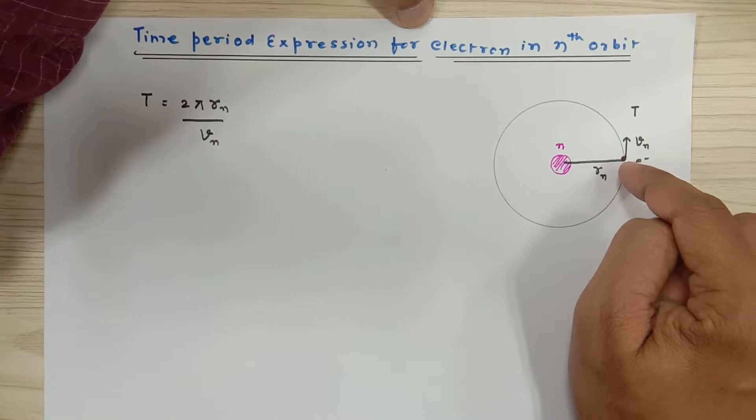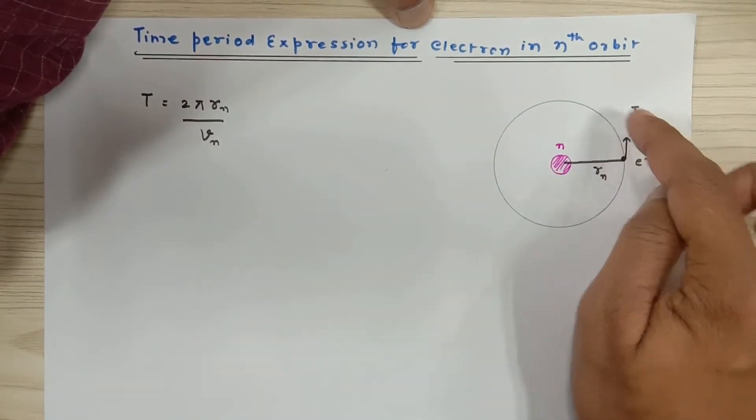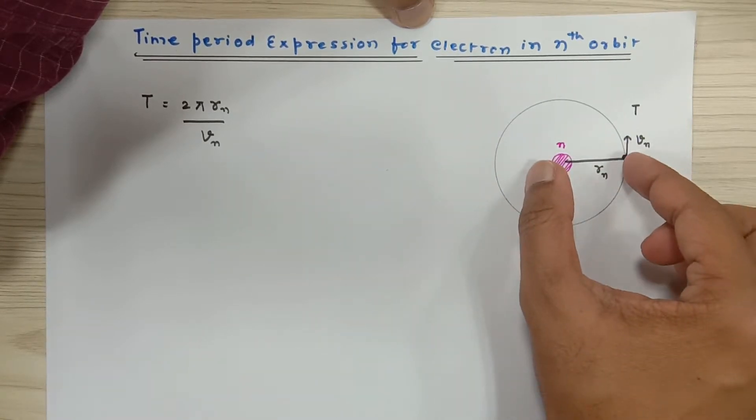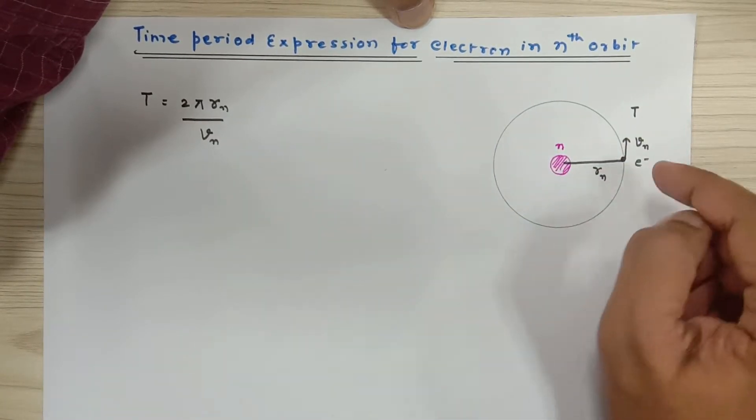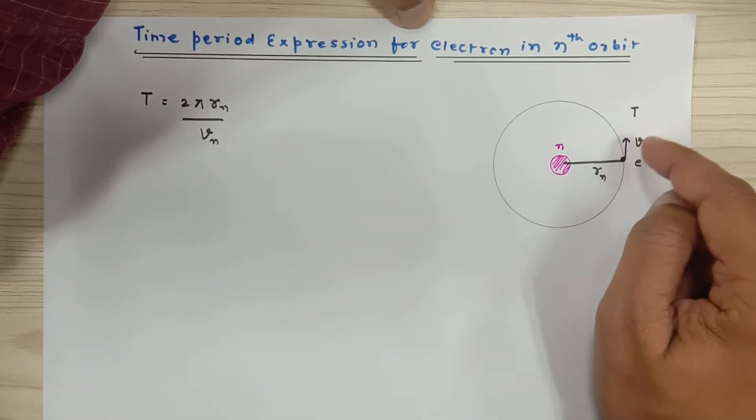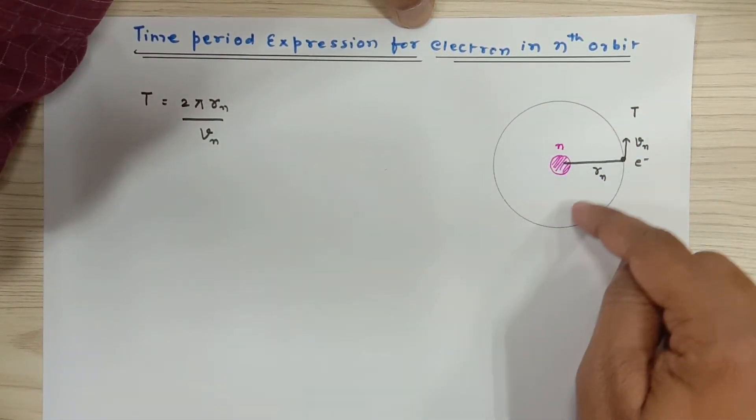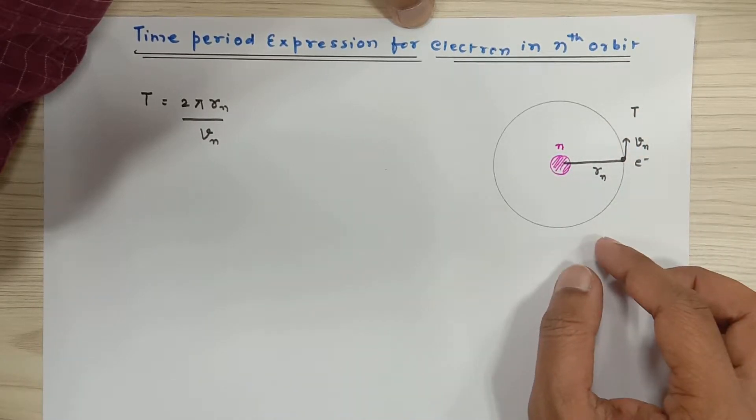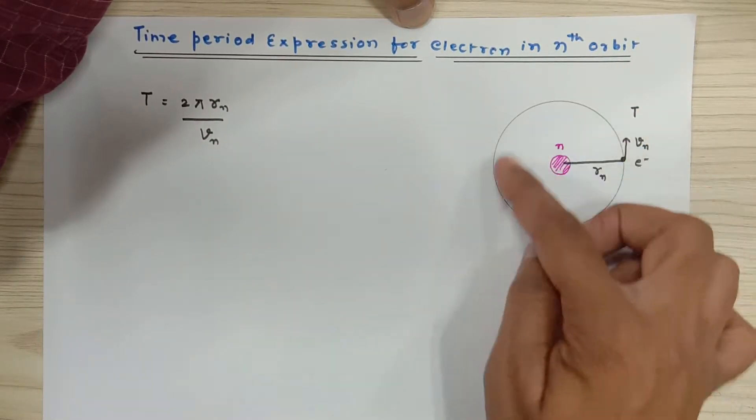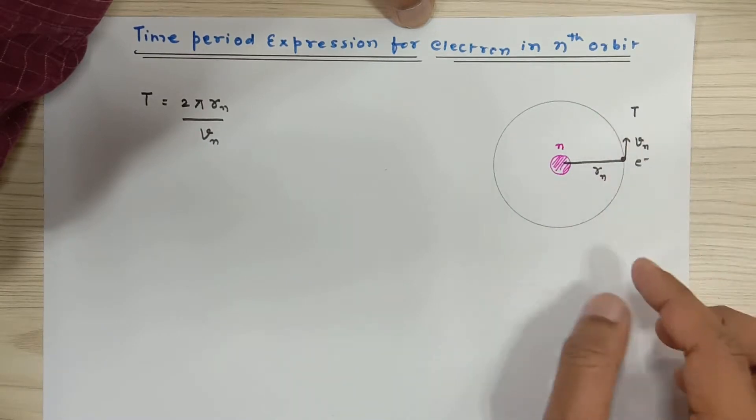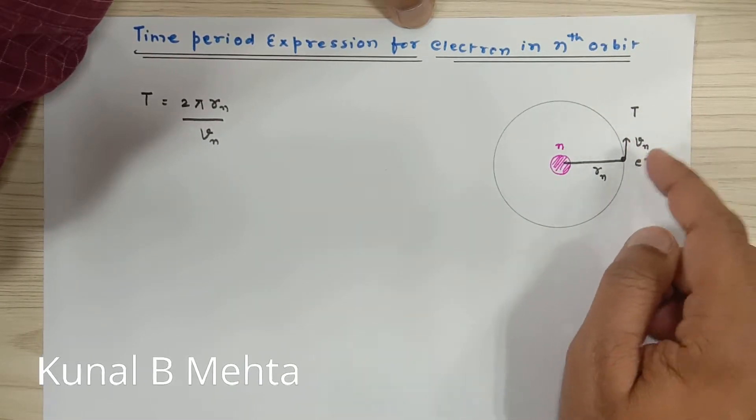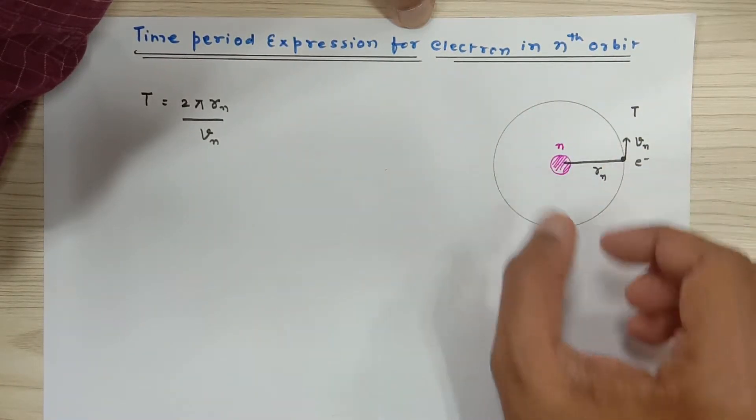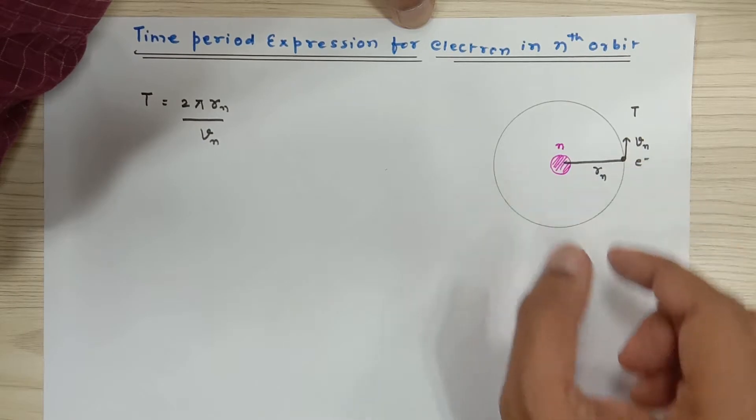Right now I have assumed there is an electron in the nth orbit which is moving round and round about the nucleus in a circular orbit having radius rn. Now this electron moves with certain velocity, and when this electron performs one complete round, the time taken is said to be the time period. So the time taken for one complete revolution is said to be time period. And in this time period, the distance traveled by the electron would be 2πr, equal to the circumference of the orbit.